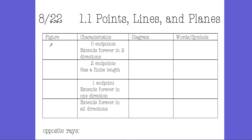If you have two points, you can create a line. A line has zero endpoints and extends forever in two directions. So if I have point A and point B, I can have a line that passes through both of those points. This line contains point A and point B, and it has arrows because it's extending forever in both directions.